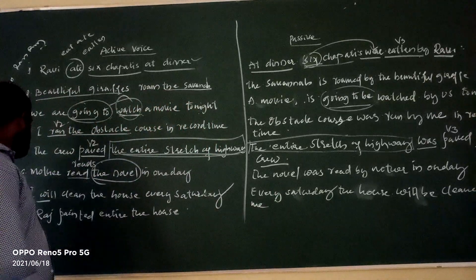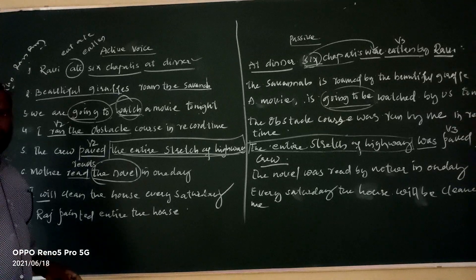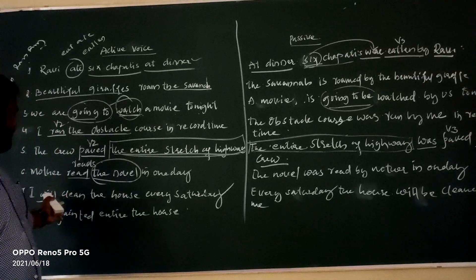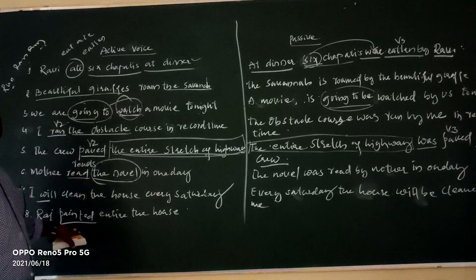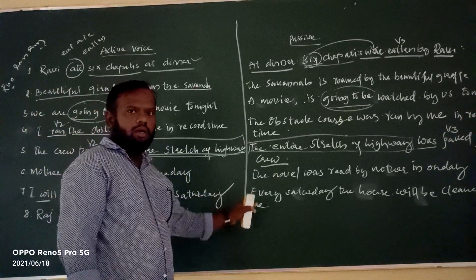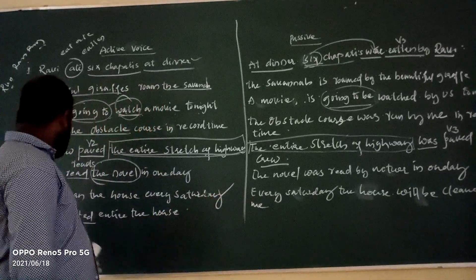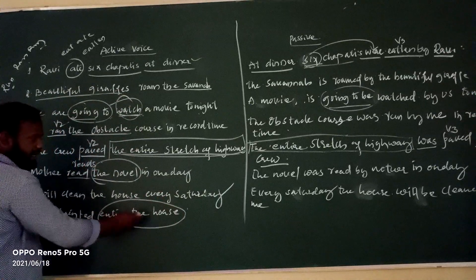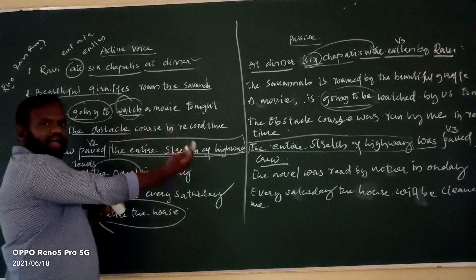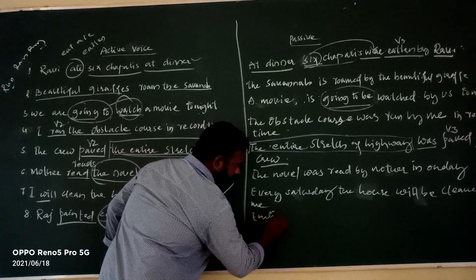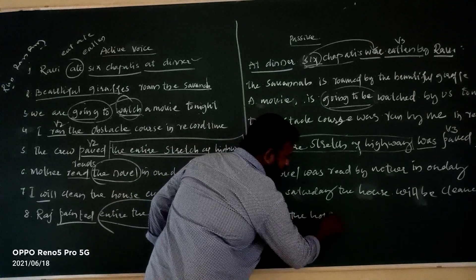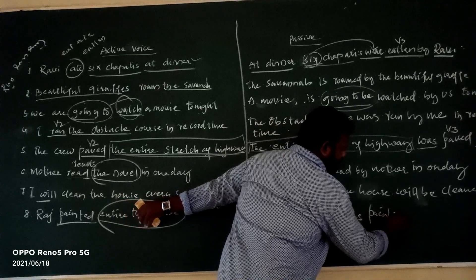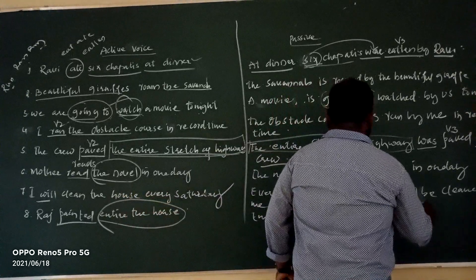The last example: 'Raj painted the entire house.' This is also in simple past tense. Changing to passive gives past continuous. The object 'the entire house' is taken first, followed by the helping verb 'was,' then V3 form 'painted,' then 'by Raj.' So the passive is: 'The entire house was painted by Raj.'